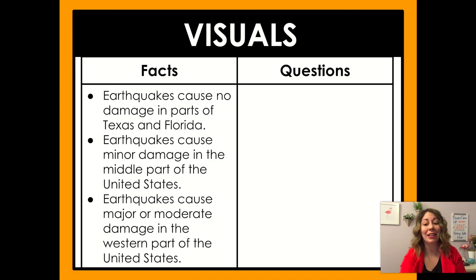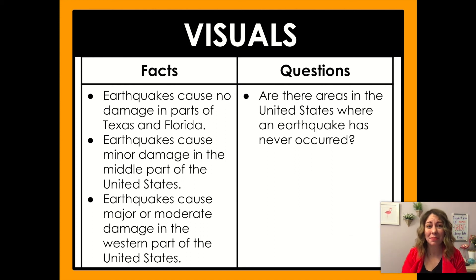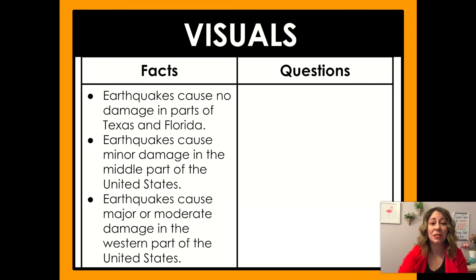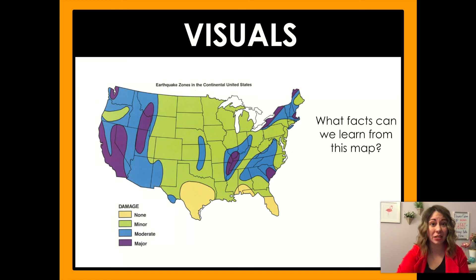We can also ask questions based on the map — like, are there areas in the United States where an earthquake has never occurred? What other questions could you come up with? There are lots of questions you could ask, like: what's the worst earthquake that has occurred in the United States? Because that map doesn't answer that for us.